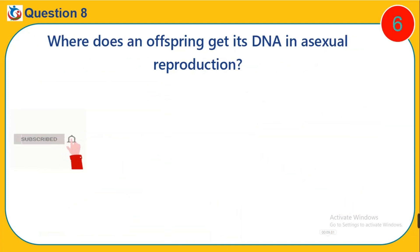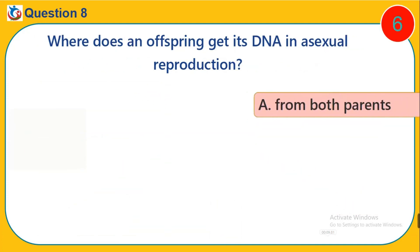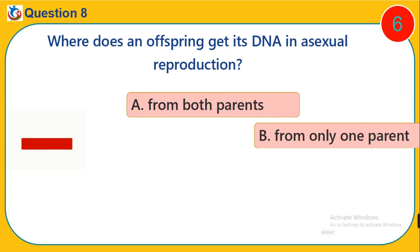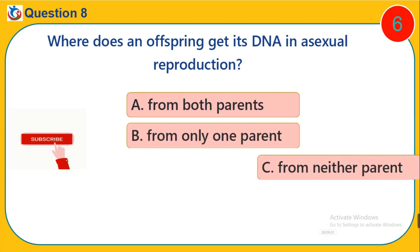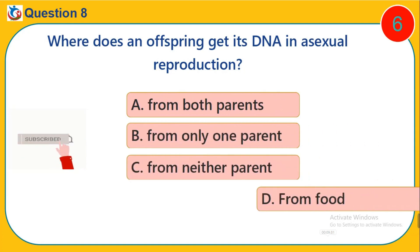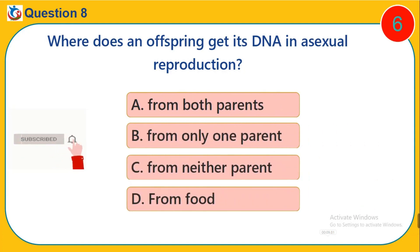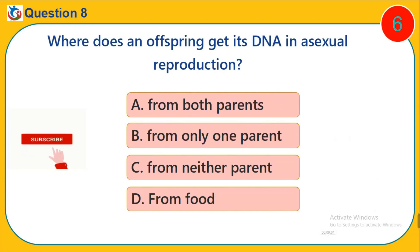Question 8. Where does an offspring get its DNA in asexual reproduction? A. From both parents. B. From only one parent. C. From neither parent. D. From food.